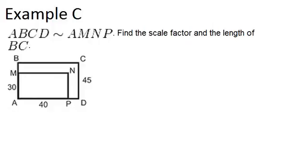ABCD is similar to AMNP. Find the scale factor and the length of BC. So first, I think we have to assume that these are both rectangles, even though there are no right angles marked. And what that means is that opposite sides are congruent. So MA of 30 means that NP is also 30.